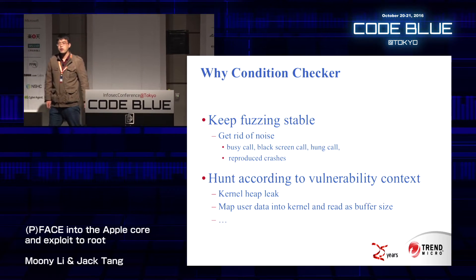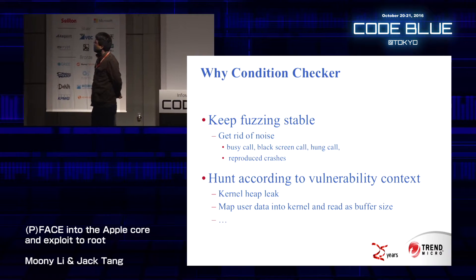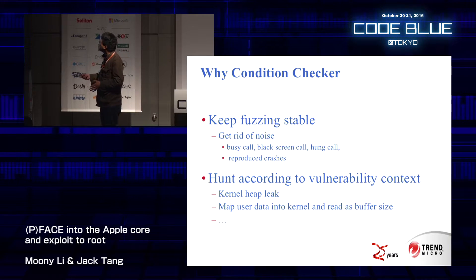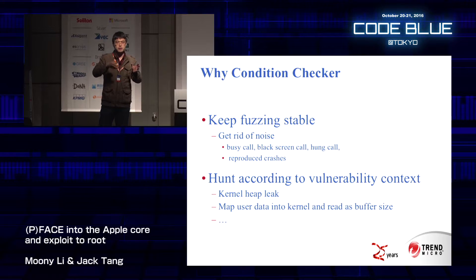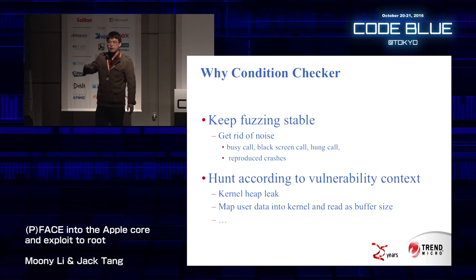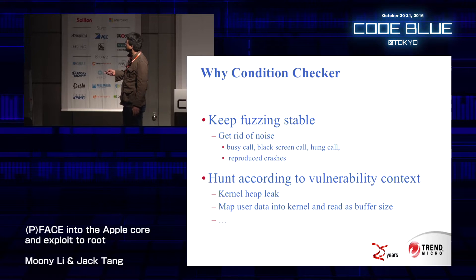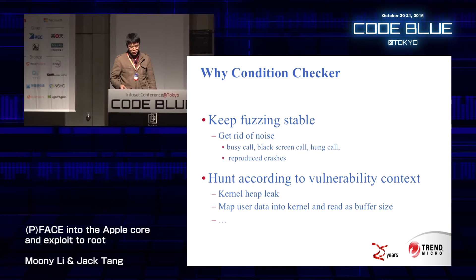Another point is about the condition tracker. Why do we introduce the condition tracker? The basic reason is to bypass all the noise from our passive fuzzing. During passive fuzzing, it could interfere with normal activities when using your OS X machine — for example, causing a black screen where the kernel is still active, or harming the kernel without crashing it. We also bypass crashes we have already reproduced. Another point is that we can find specific types of vulnerabilities using the condition tracker.